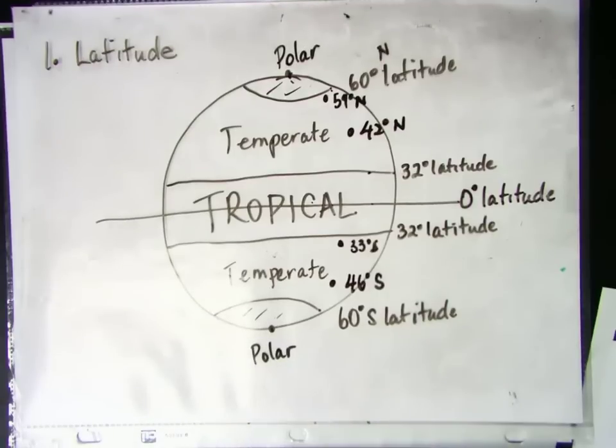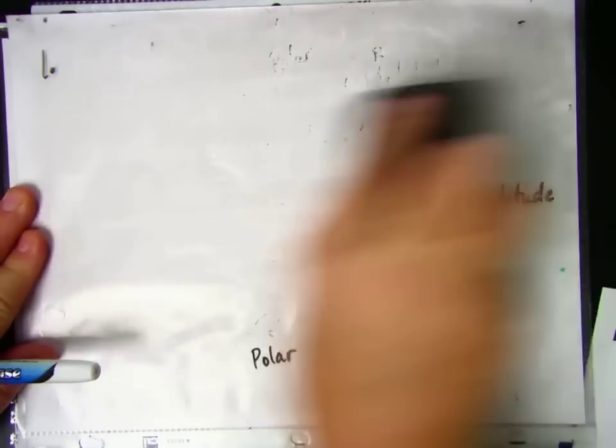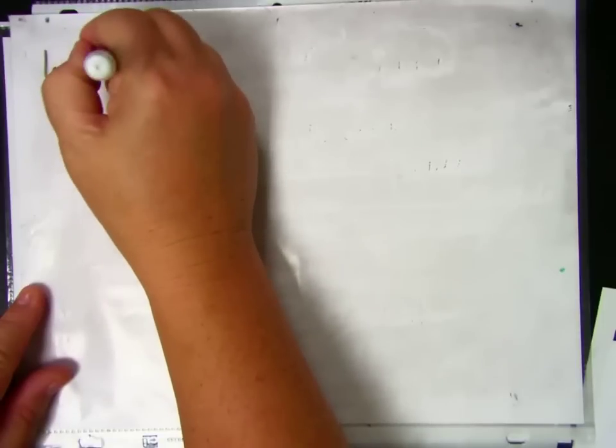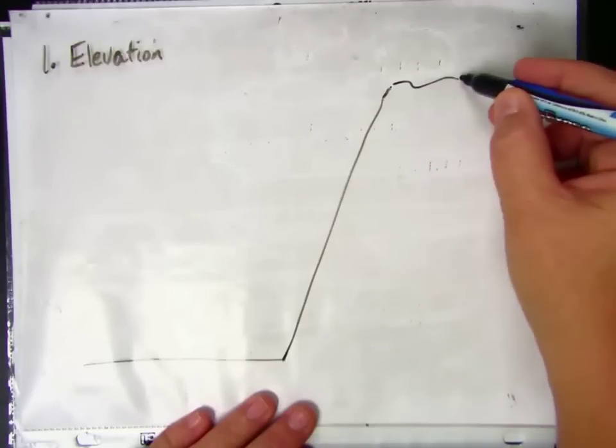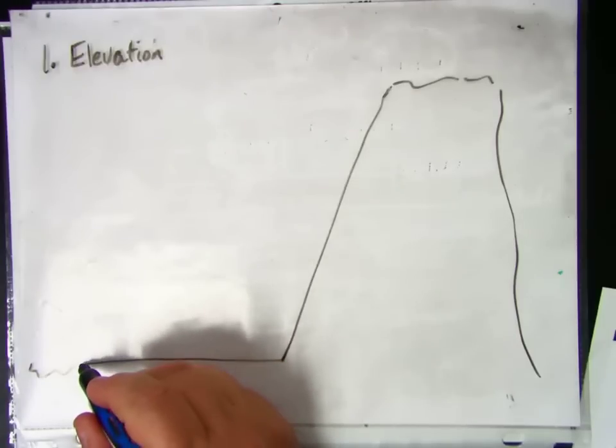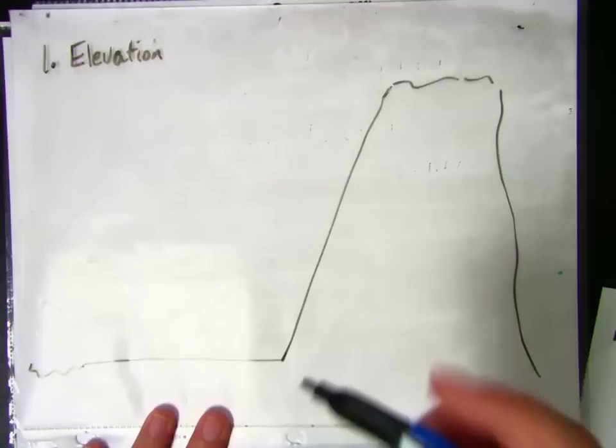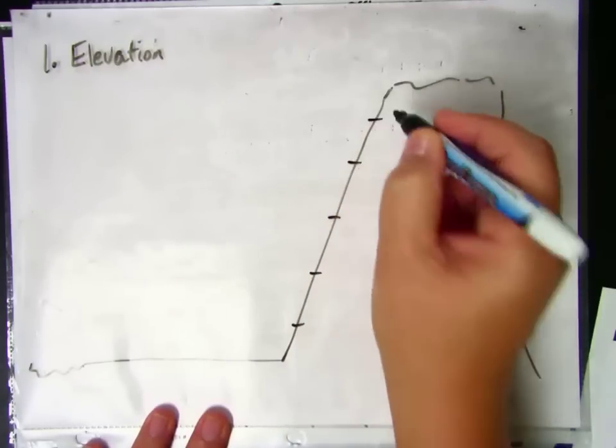The next factor affecting climate is elevation. And elevation is something that tells us how high up from ground we are. And elevation is determined by how far above the surface of the earth you are. So down here, let's say this would be at sea level, which is the level of the oceans or the seas. And as you get increasingly higher, it's called elevation.